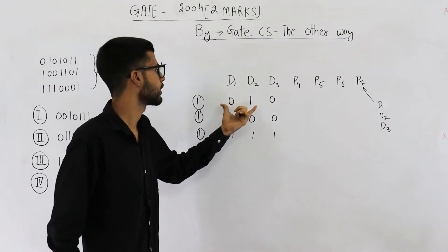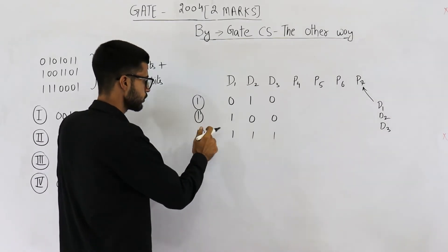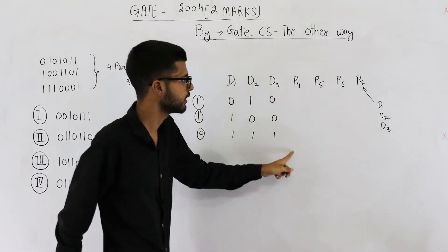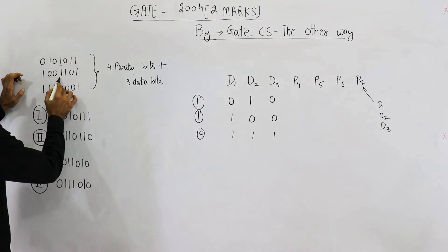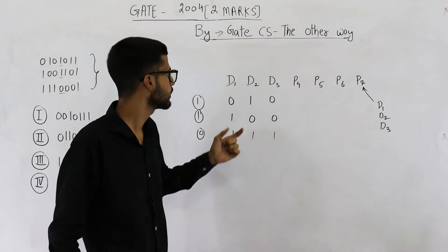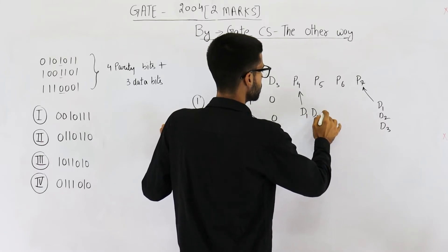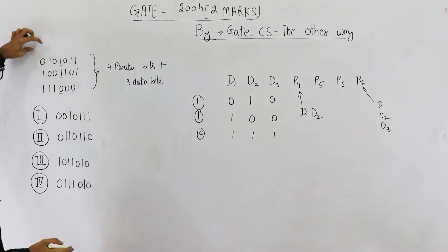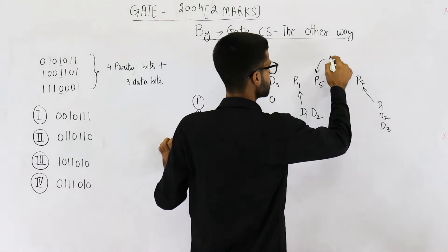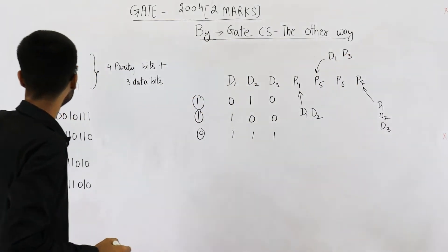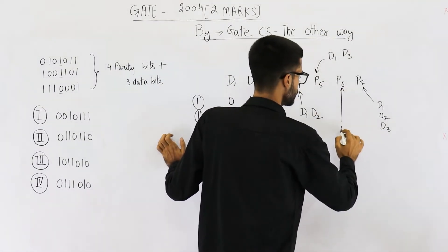Similarly, we can take two data bits at a time. The parity of d1 and d2 for the three patterns is 1, 1, 0. Checking which parity bit column has 1, 1, 0 — it is p4. So p4 represents the parity of d1 and d2. Similarly, p5 represents the parity of d1 and d3, and p6 represents the parity of d2 and d3.